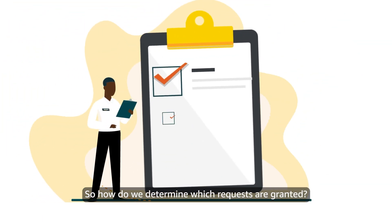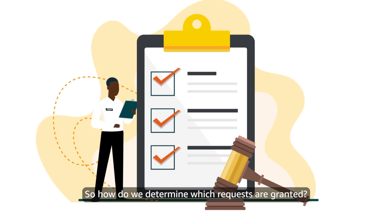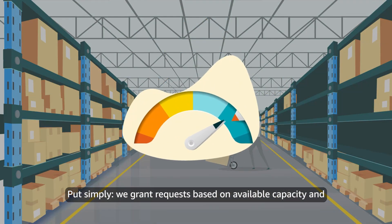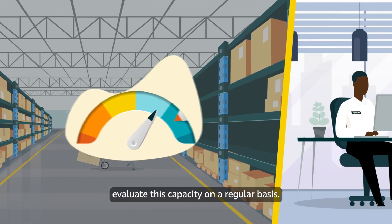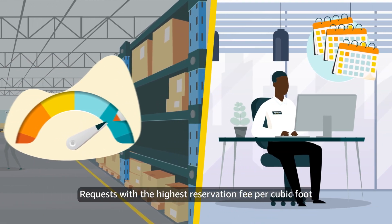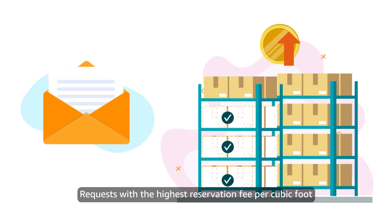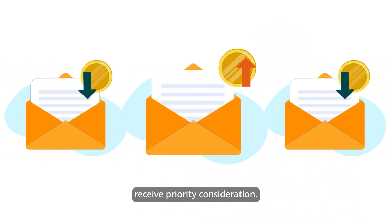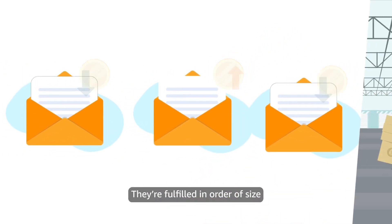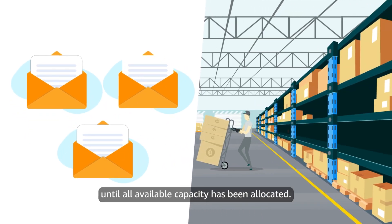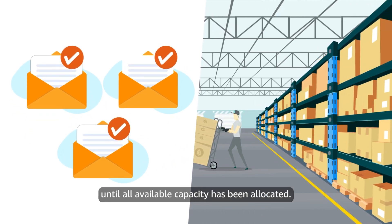So how do we determine which requests are granted? Put simply, we grant requests based on available capacity and evaluate this capacity on a regular basis. Requests with the highest reservation fee per cubic foot receive priority consideration, and they're fulfilled in order of size until all available capacity has been allocated.